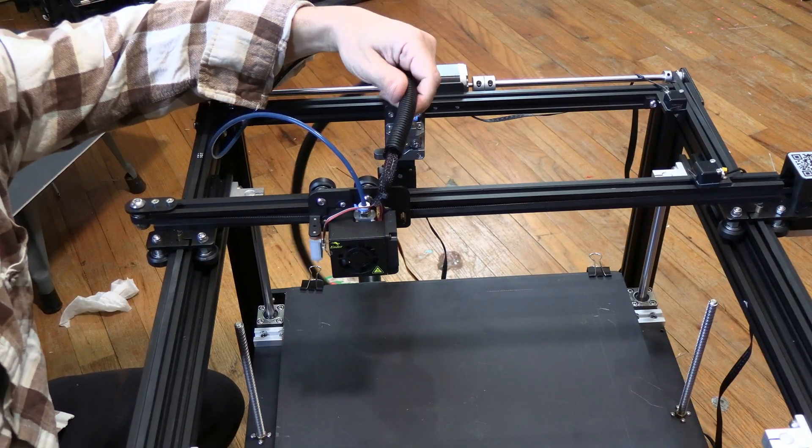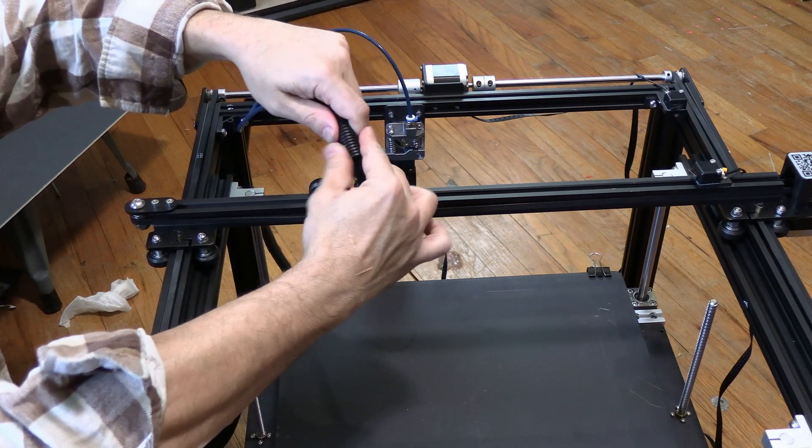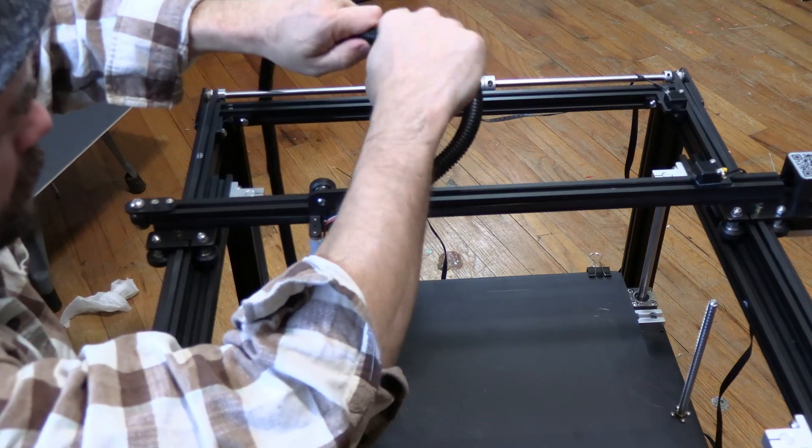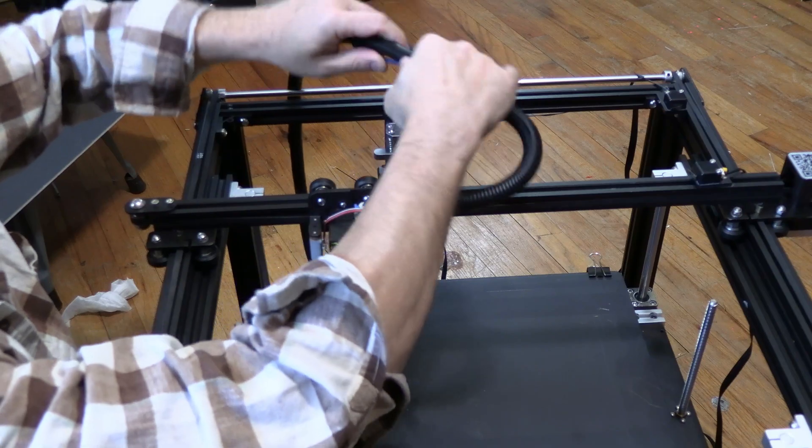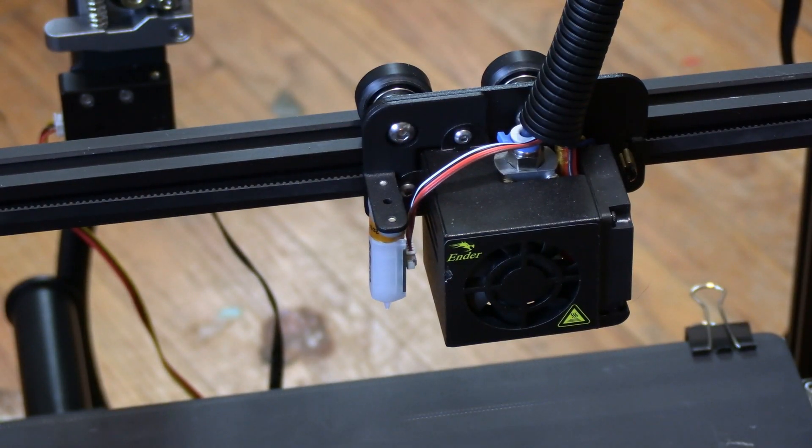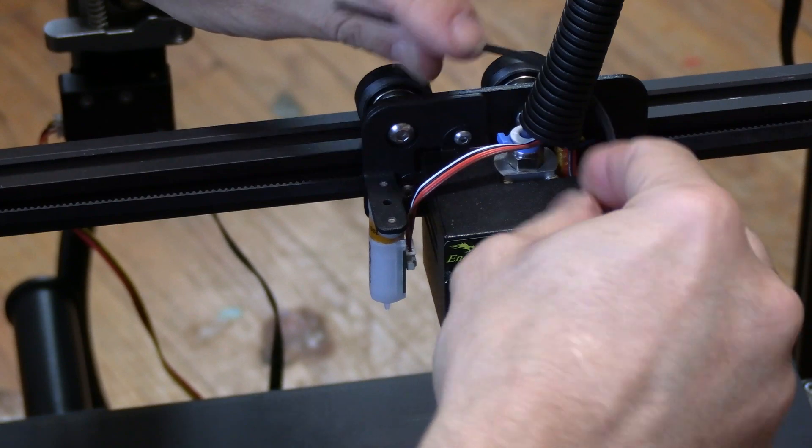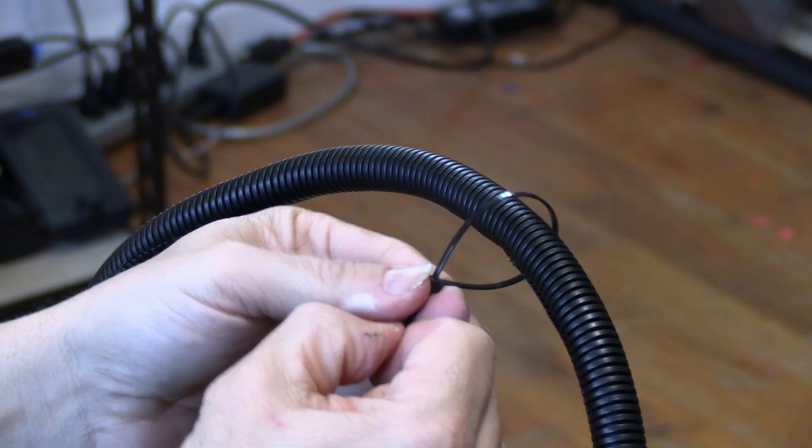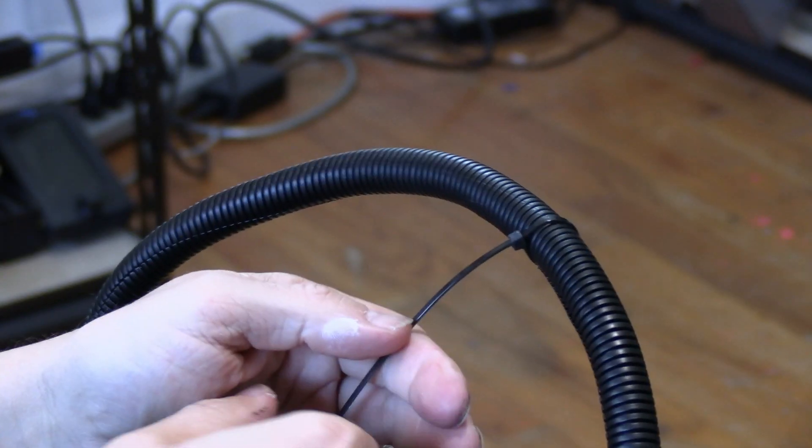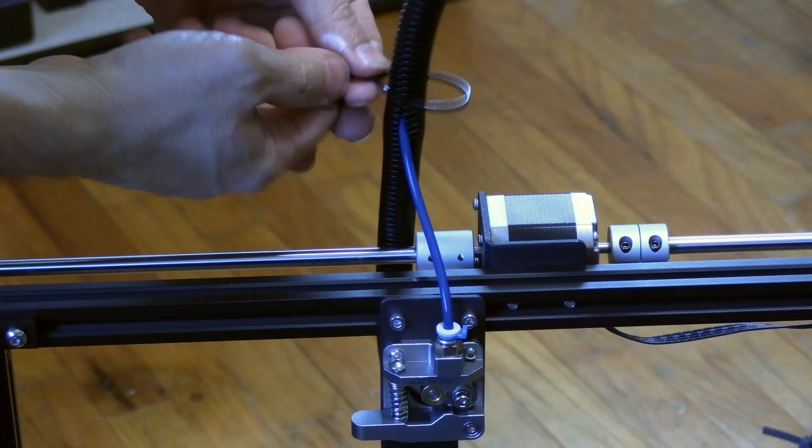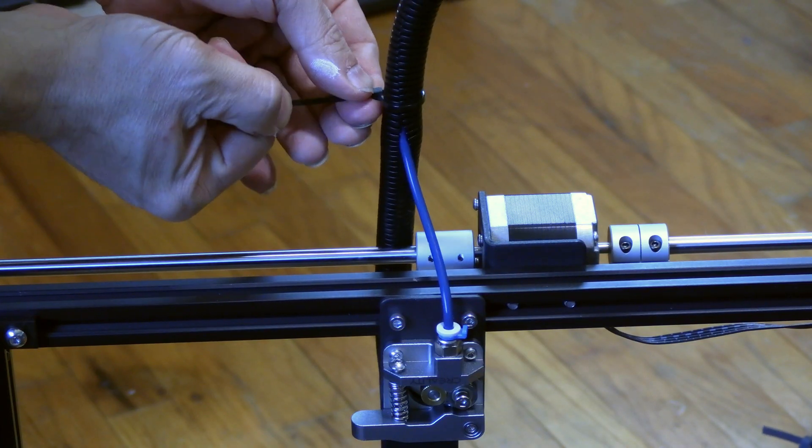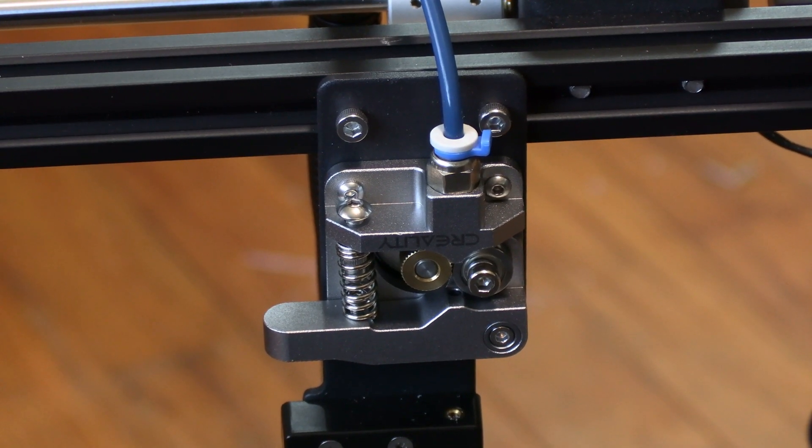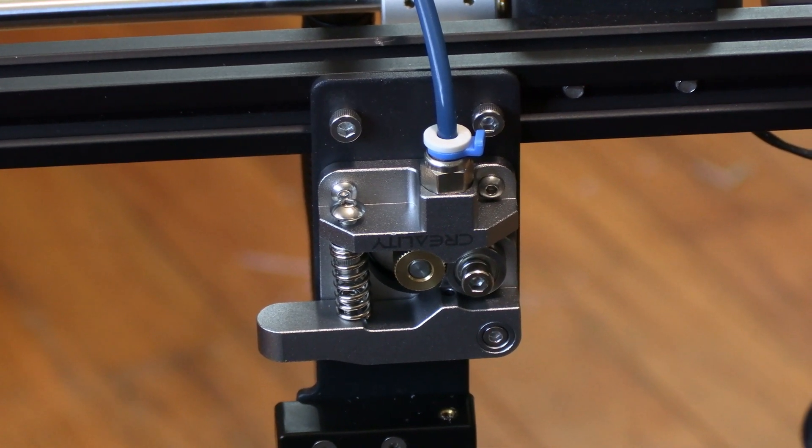You can now take this plastic tubing and work your Bowden tube into it. To help it stay put, take a small zip tie and put it around the cover. And there you have it. You've installed the all metal Creality extruder and the blue Capricorn PTFE tube.